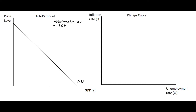What this has meant is that the short-run aggregate supply curve has flattened over time. What we have here is a short-run aggregate supply curve that is flatter than it used to be, and what this means is in terms of any change in aggregate demand in the economy.